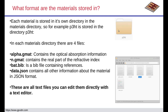The materials database is effectively a collection of directories. Here's a directory called 'p3ht' — inside this directory there will be four files: alpha.gmat, n.gmat, map.bib, and data.json. alpha.gmat contains the optical absorption information — basically absorption as a function of wavelength. n.gmat contains the real part of the refractive index as a function of wavelength. map.bib is a BibTeX file containing where the material data came from. data.json contains anything else in JSON format. These are all text files you can edit with Notepad or whatever you want.